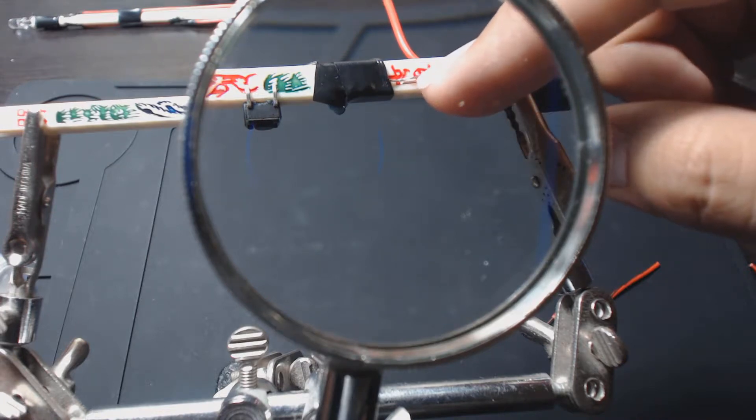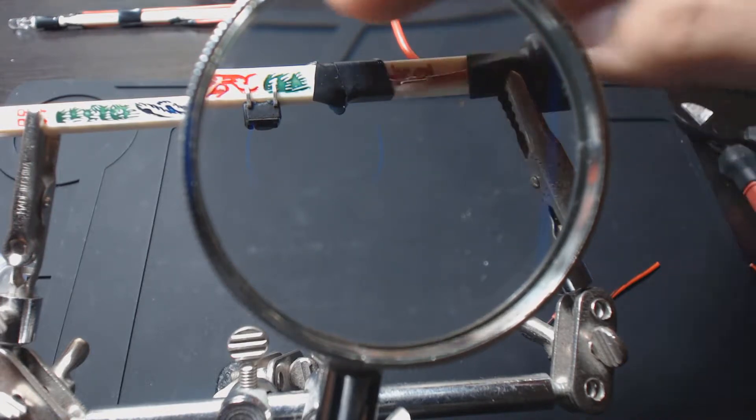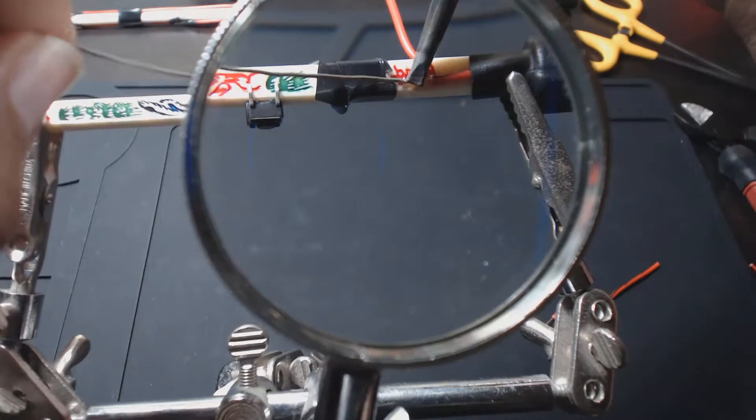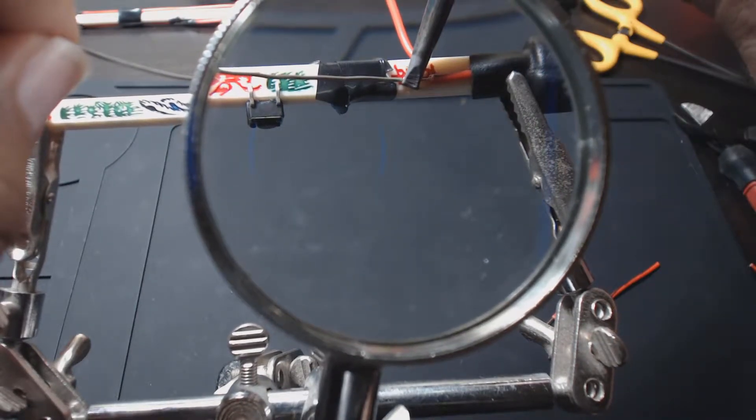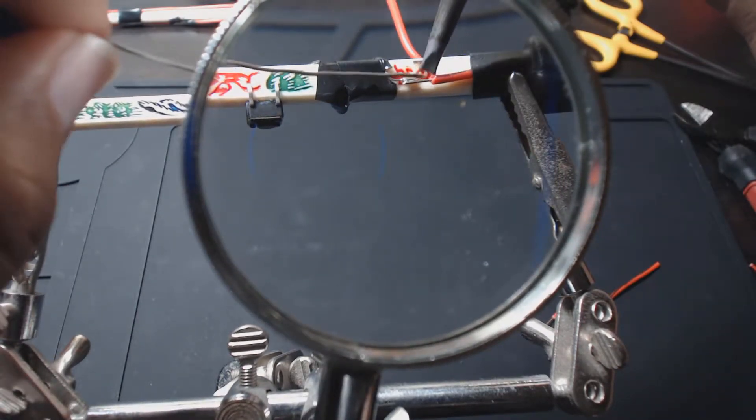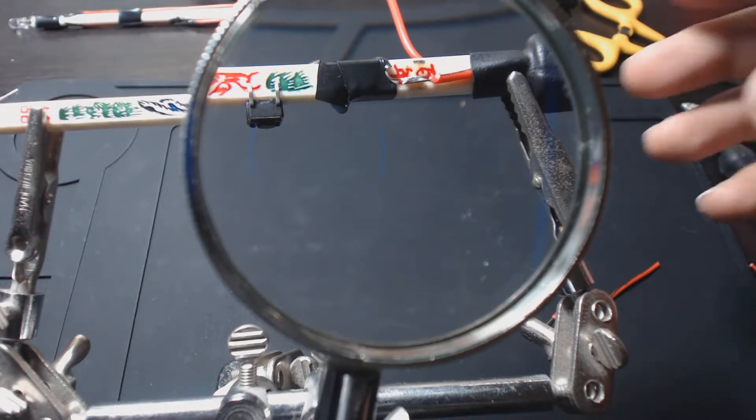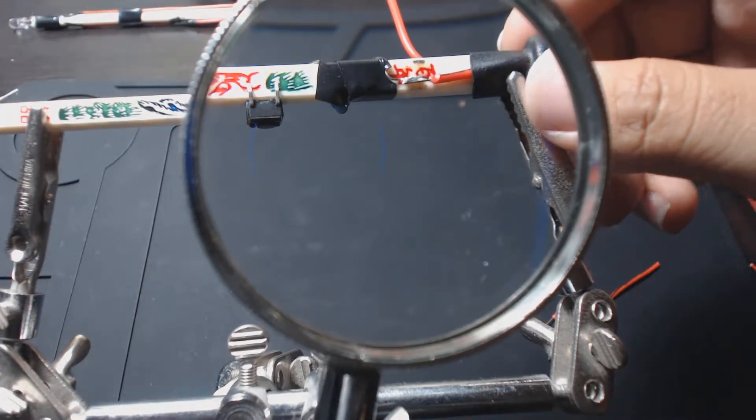So we're going to solder these pieces together now. This is our negative wire connecting to our resistor that connects to our switch. Alright, and we got our soldering connection. Soldering is a little sloppy—my solder is a little sloppy—but it looks like it should hold.